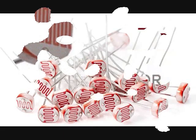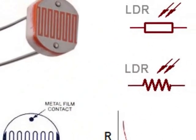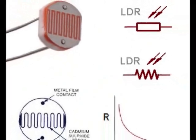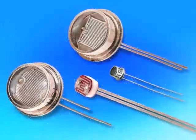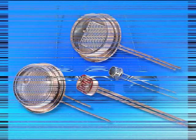LDR resistor, abbreviation for light-dependent resistor. The value of this resistance changes with the intensity of light radiation to it. The higher the light intensity, the lower its resistance, like a photocell.